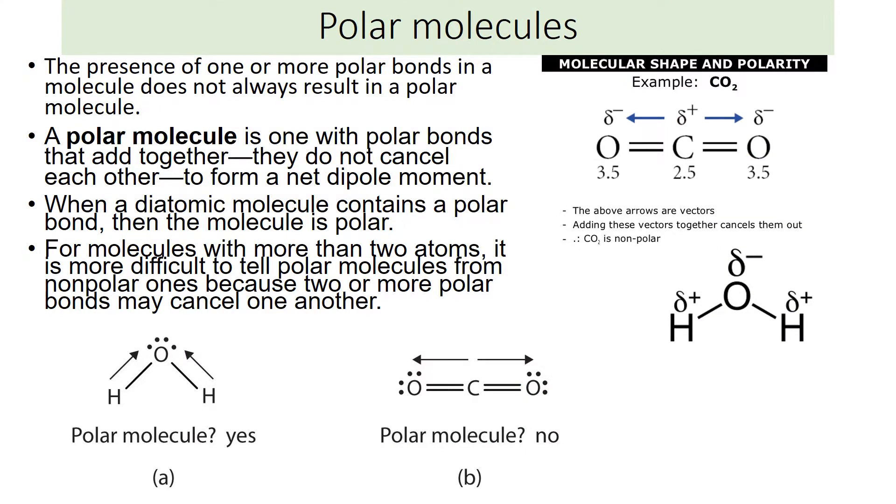So finding polarity of bonds is pretty simple, but it gets a little more complicated with molecules. The presence of one or more polar bonds in a molecule doesn't always result in a polar molecule. A polar molecule is one with polar bonds that add together. They do not cancel each other out, so they form a net dipole.